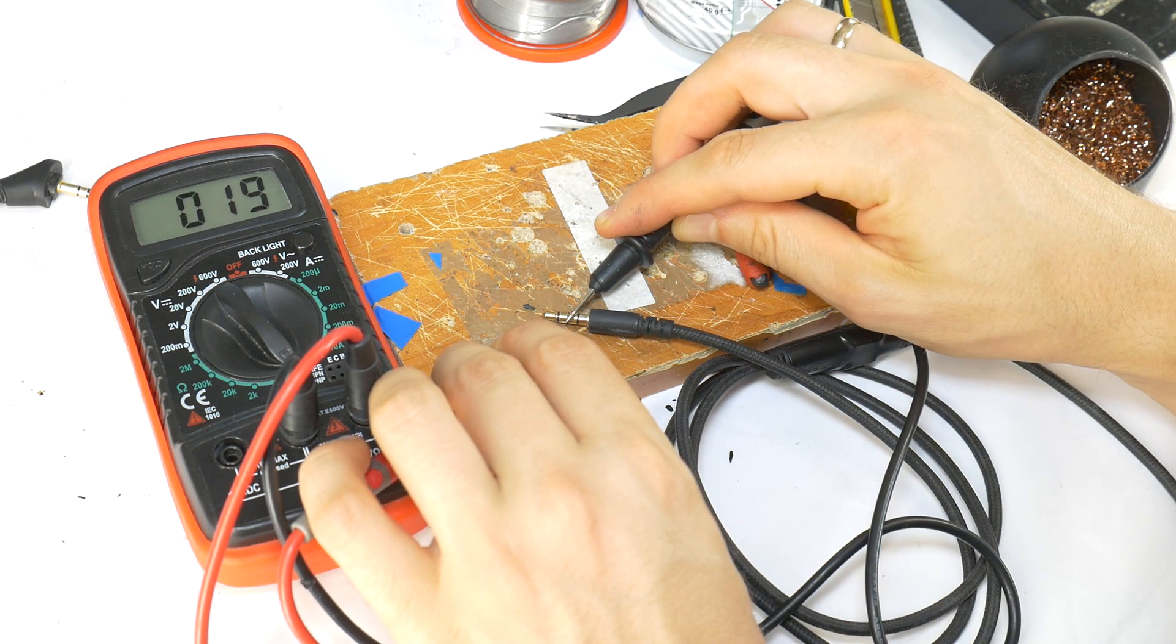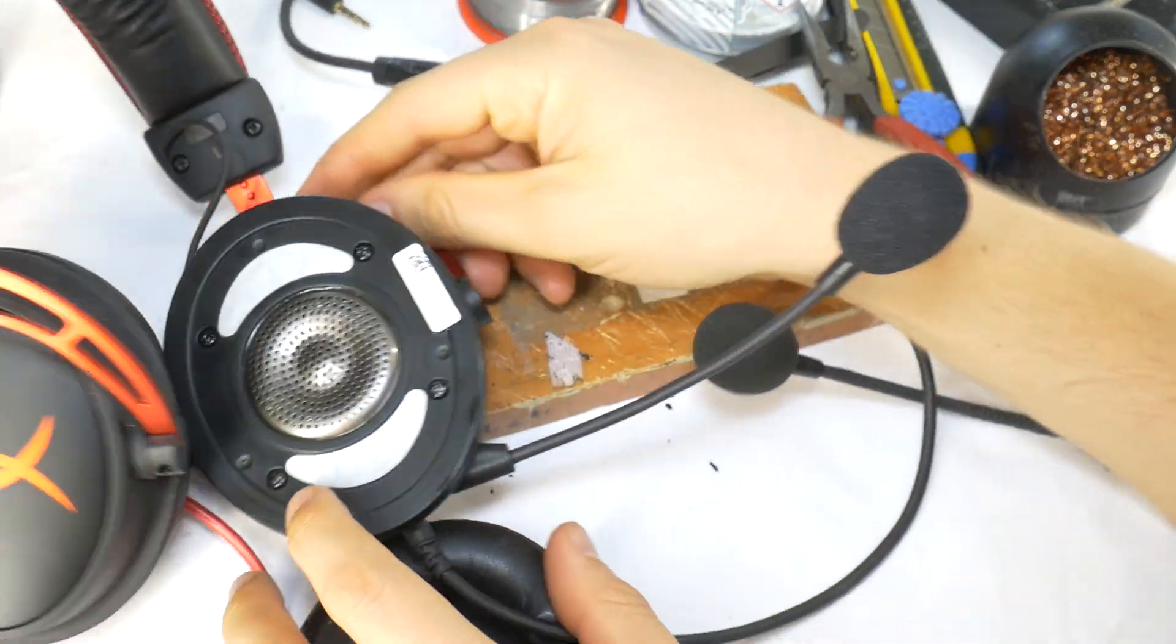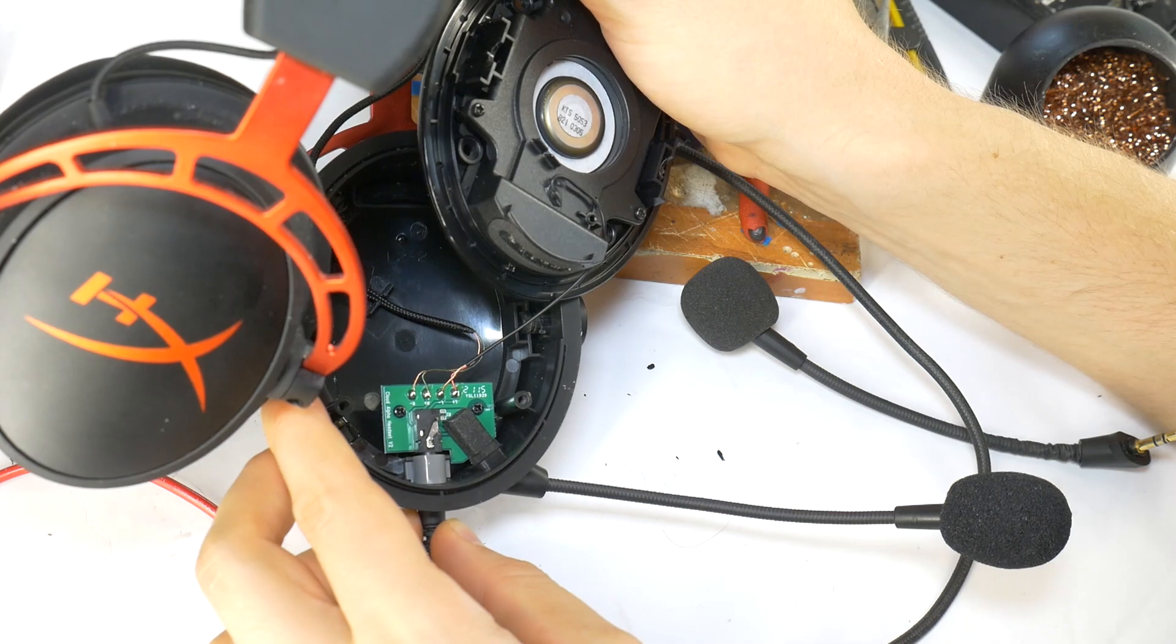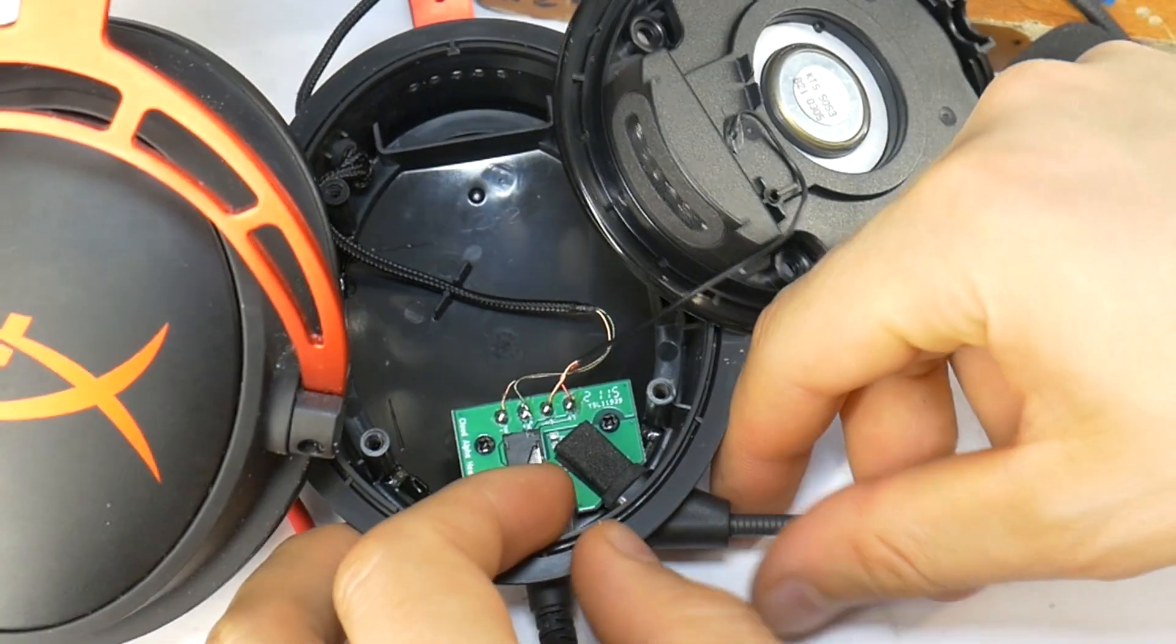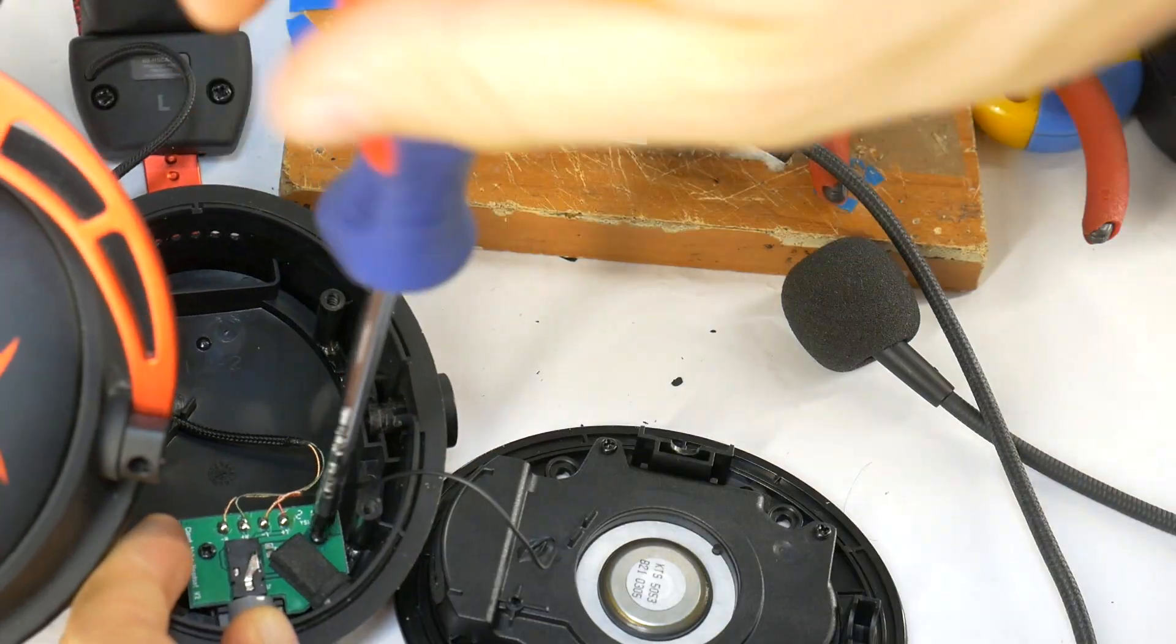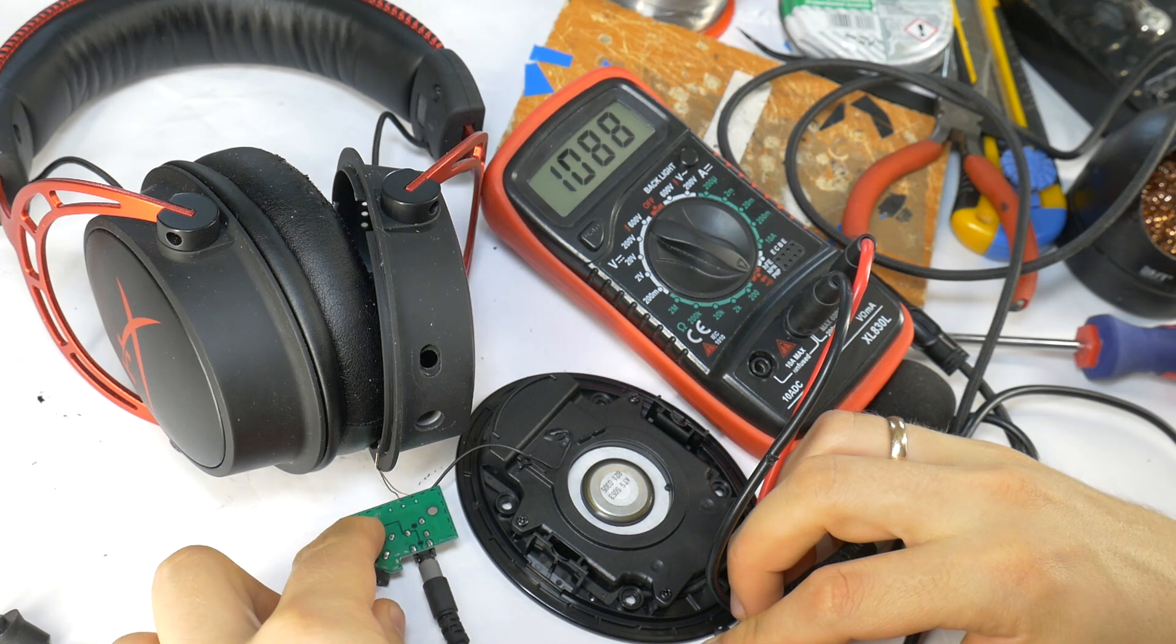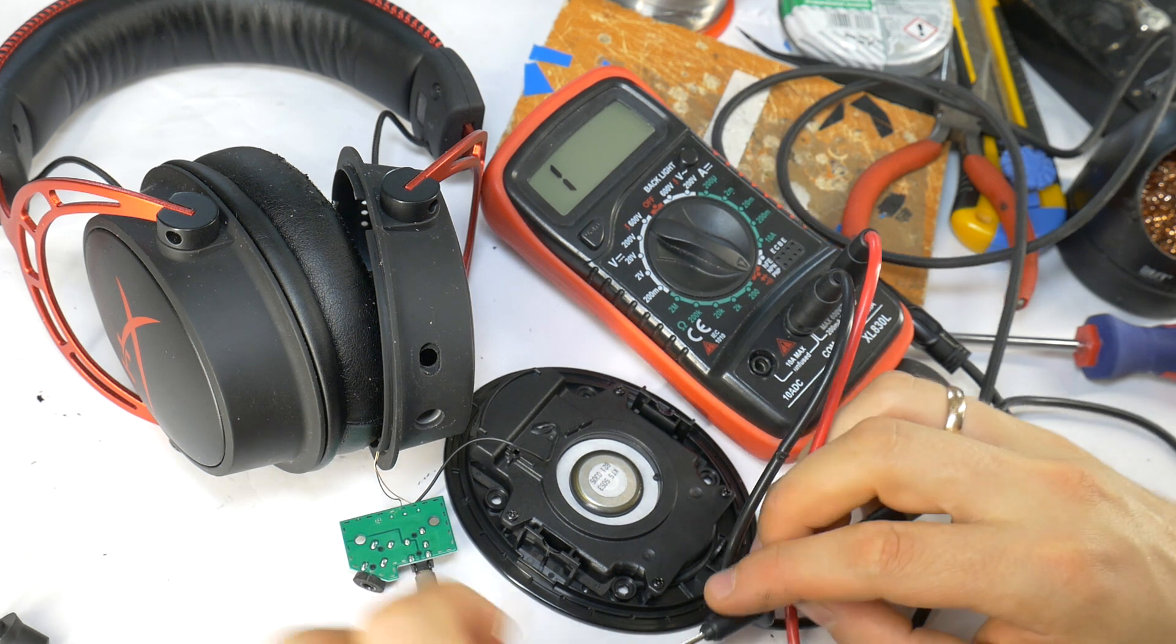Remove the earpad on the side where the cable attaches, then unscrew the housing. Inside you will find a small board with two 3.5 mm sockets for the audio cable and mic. Then unscrew the board and check that the jack wires reach the board contacts and the mic contacts also connect properly.